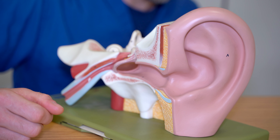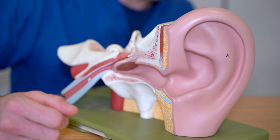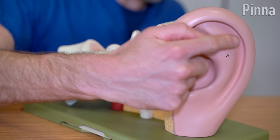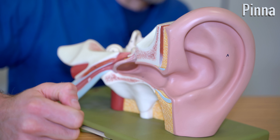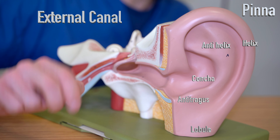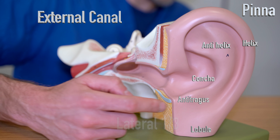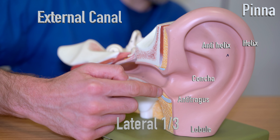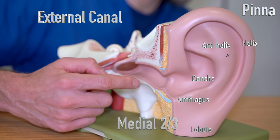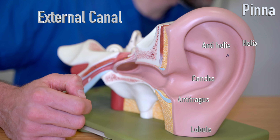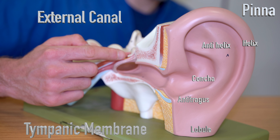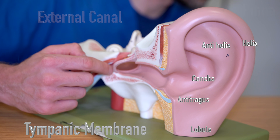Here we have the ear — the external ear — which has three parts. We've got the pinna, the actual ear to you and I. We've got the external ear canal, which also has two components: the cartilaginous one-third on the outside, and then the bony medial two-thirds part further back into the skull. And as the final part of the external ear, we've got the lateral external surface of the tympanic membrane, or the eardrum.